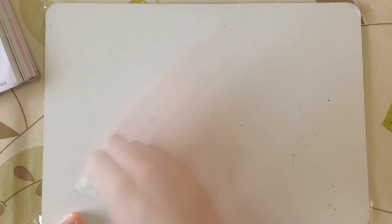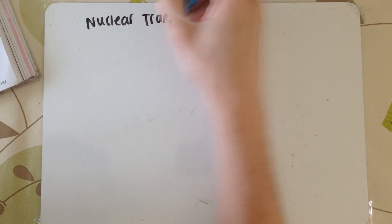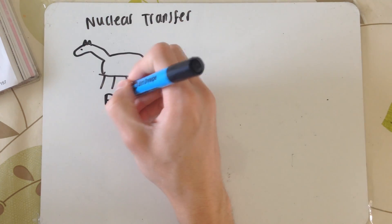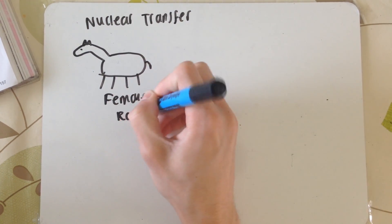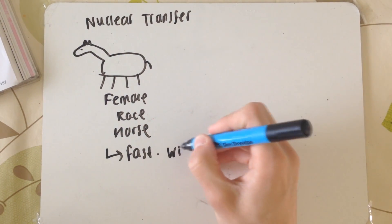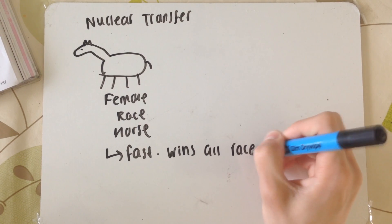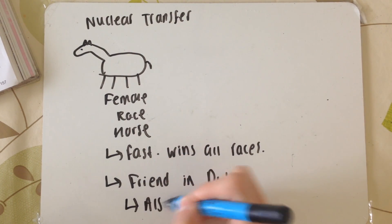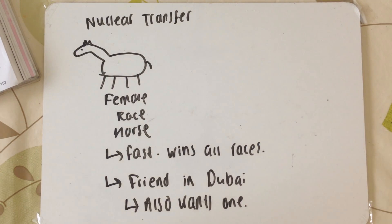The next method is nuclear transfer, which produces a genetically identical clone to your original animal. Here we have our female racehorse. The book gives Dolly the sheep, but we're going to choose a racehorse because people like racehorses. This horse is big, muscly, fast, and wins all the races. We've got a friend in Dubai who's very rich and he also wants a clone of this horse.